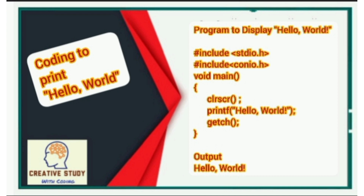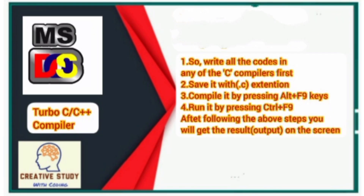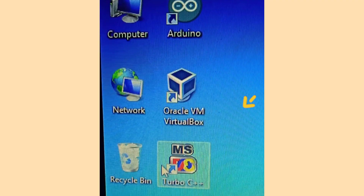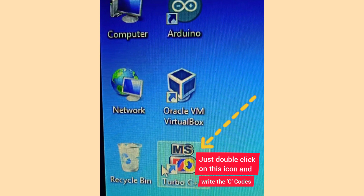Let's see the coding to print Hello World. You can print anything in the printf function. This is the icon of the Turbo C or C++ compiler, and you have to follow these steps: first, write all codes in the C compiler; save it with a .c extension; compile it using Alt+F9; and run it using Ctrl+F9. You can see the icon of the Turbo C compiler on the computer screen — just double-click on it and write the C codes.